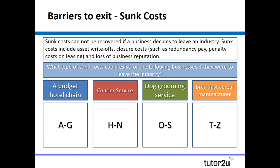The task is based on four different businesses: a hotel chain, a courier service, a dog grooming service, and a breakfast cereal manufacturer. You can set this for students to work through individually, or as an in-class exercise splitting the four businesses across small groups. When I ran this exercise, I split students by first-name initials — A to G did the budget hotel chain, through to T to Z doing the breakfast cereal manufacturer. Allow a minute or two to think about what types of sunk costs could exist for each business, discuss ideas, and then here are the possible answers students came up with.